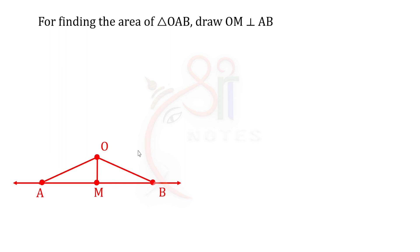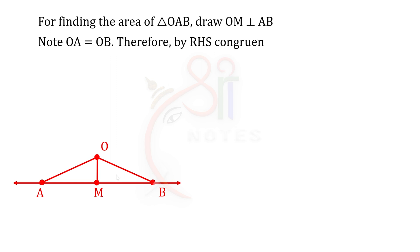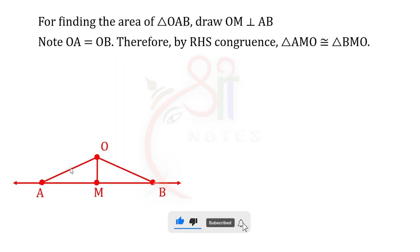OA equals OB equals 21 centimeters. By RHS congruence, triangle AMO is congruent to triangle BMO. Therefore the perpendicular OM bisects AB into two equal parts.